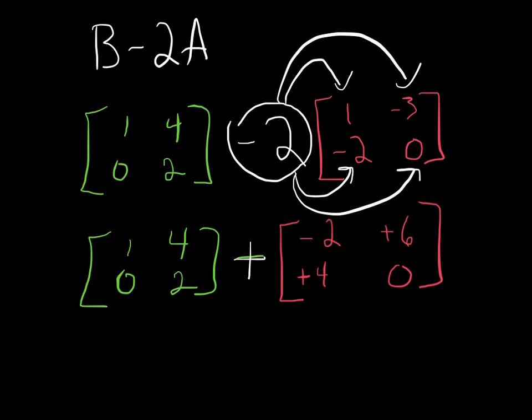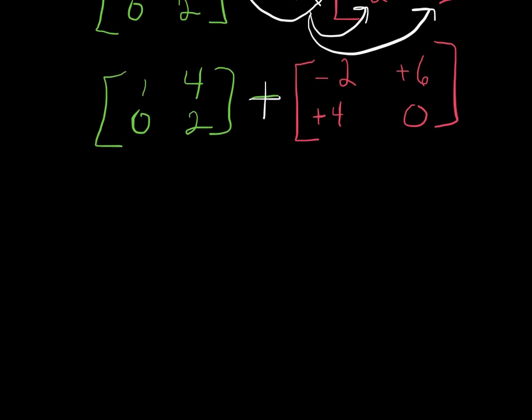And now we just have basic matrix addition, which this is going to be pretty simple here. 1 plus negative 2 is going to be negative 1. 4 plus 6 is 10. 0 plus 4 is 4. And then 2 plus 0 is 2. And there I have it. I've successfully simplified that expression.